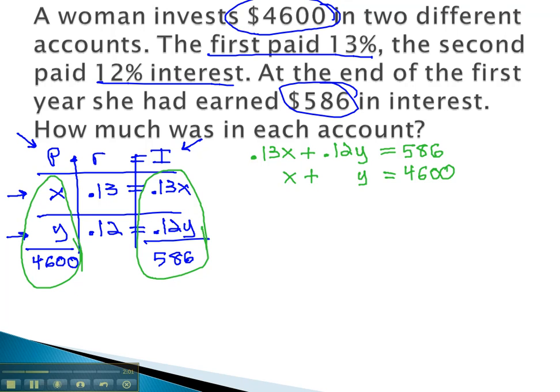We can solve this system now using the addition method by eliminating the y, multiplying by negative .12. The first equation is unchanged, .13x plus .12y equals 586. The second equation, negative .12x, negative .12y, equals negative 552.